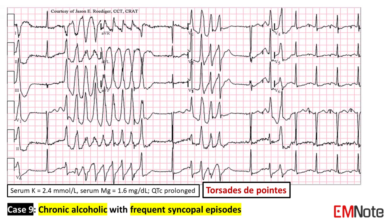Common causes of torsades de pointes include drug-induced QT prolongation, low serum magnesium, low serum potassium, or congenital long QT syndrome.